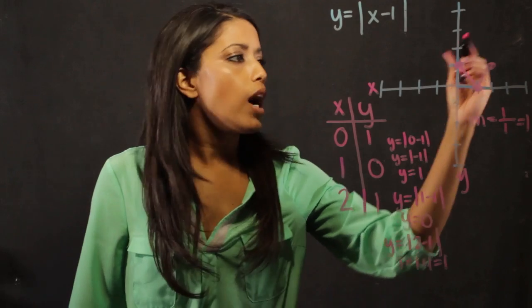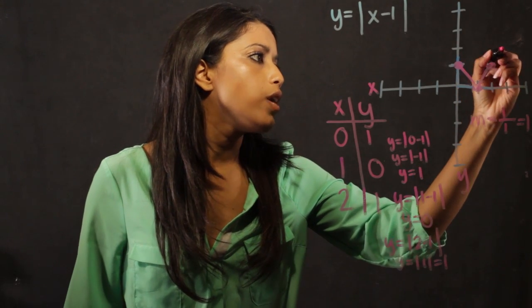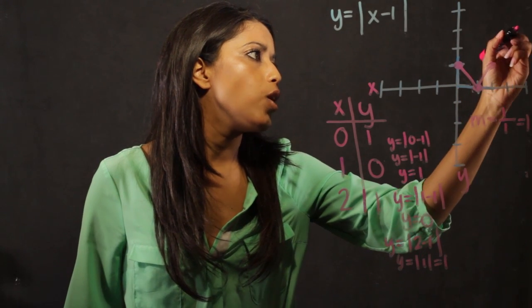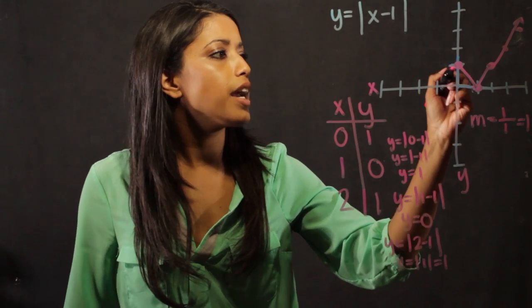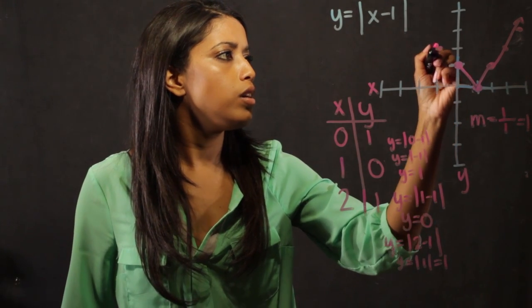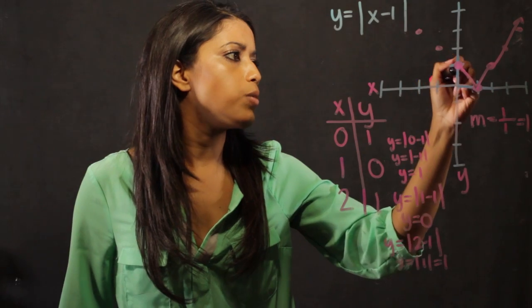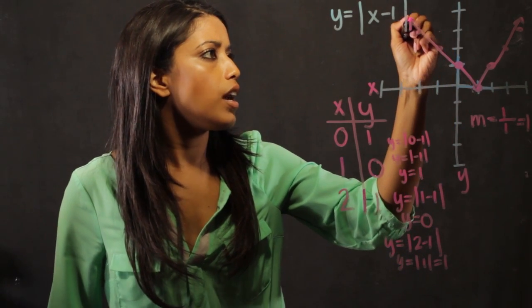If I want to continue graphing this absolute value, I'm going to go up 1 over 1, up 1 over 1, and it will continue on. On this side, it does the same thing. I'll go up 1 over, up 1 over, and it will continue as well.